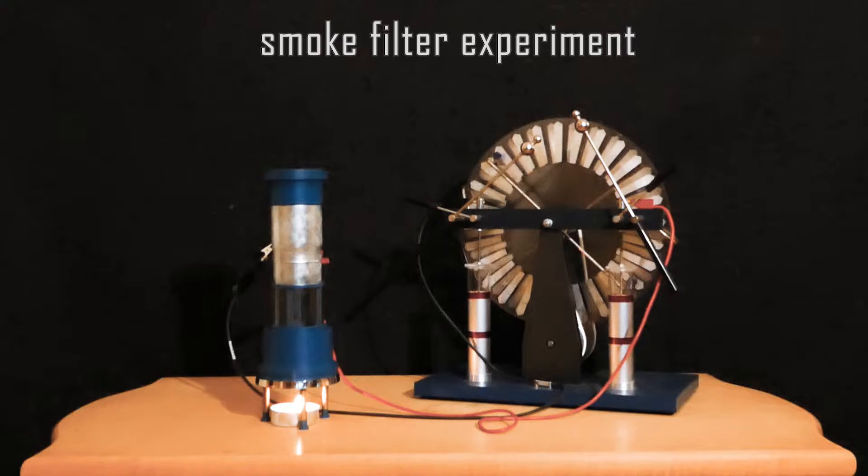The smoke particles get charged negatively when they reach the grid, and get then attracted by the positively charged tube. It stops the smoke.